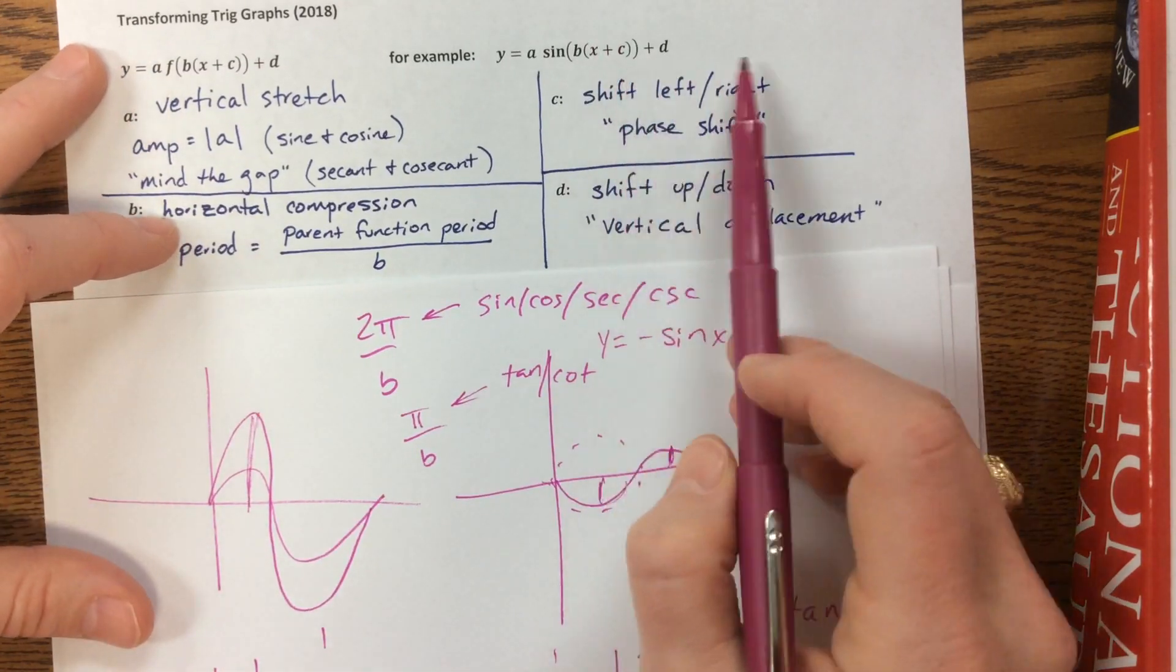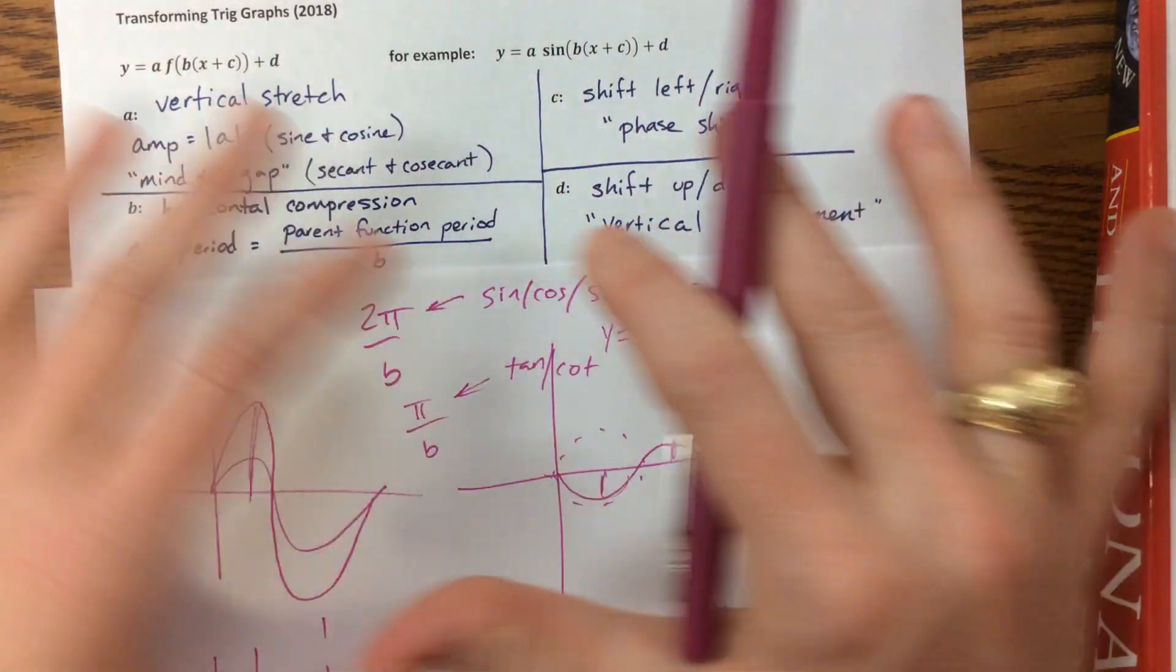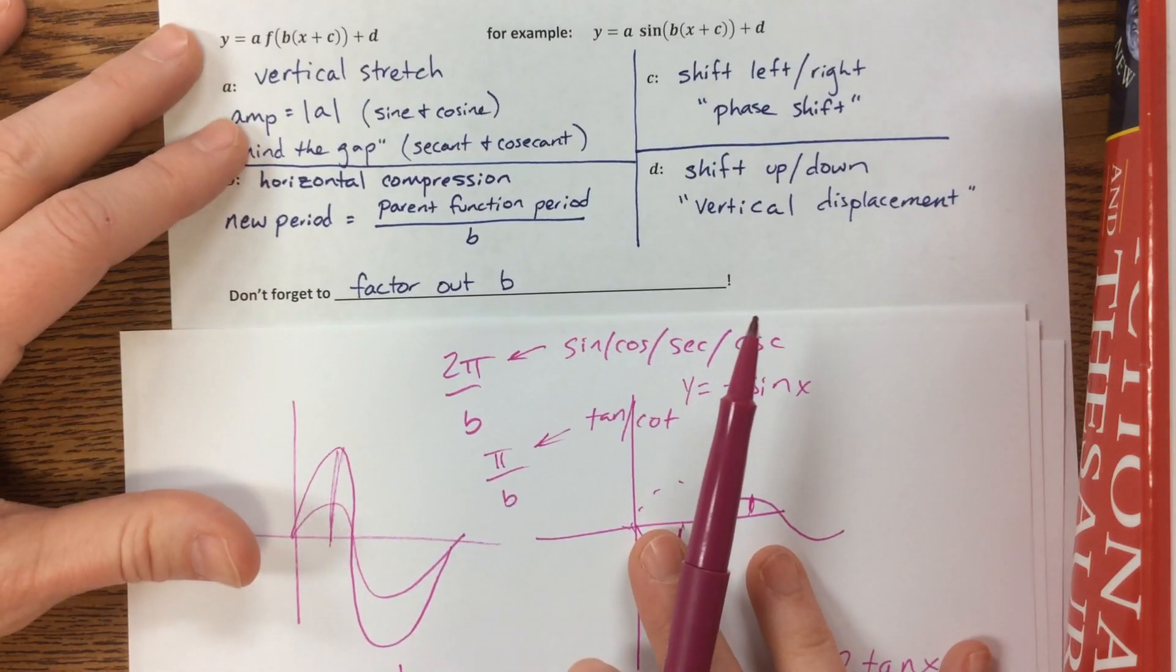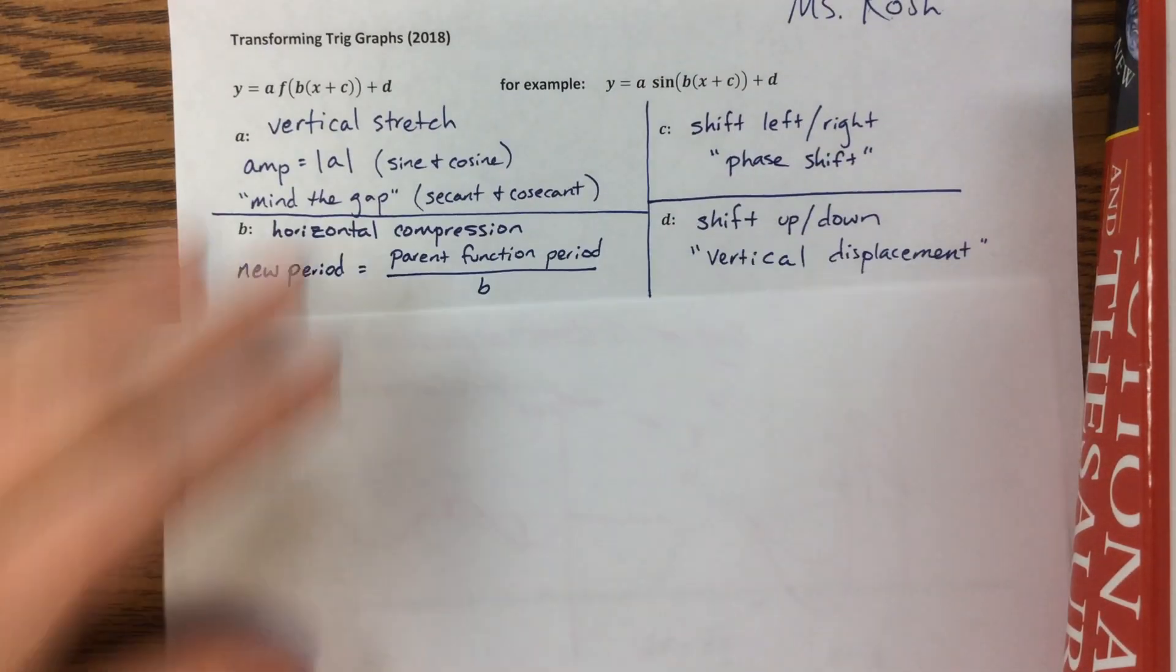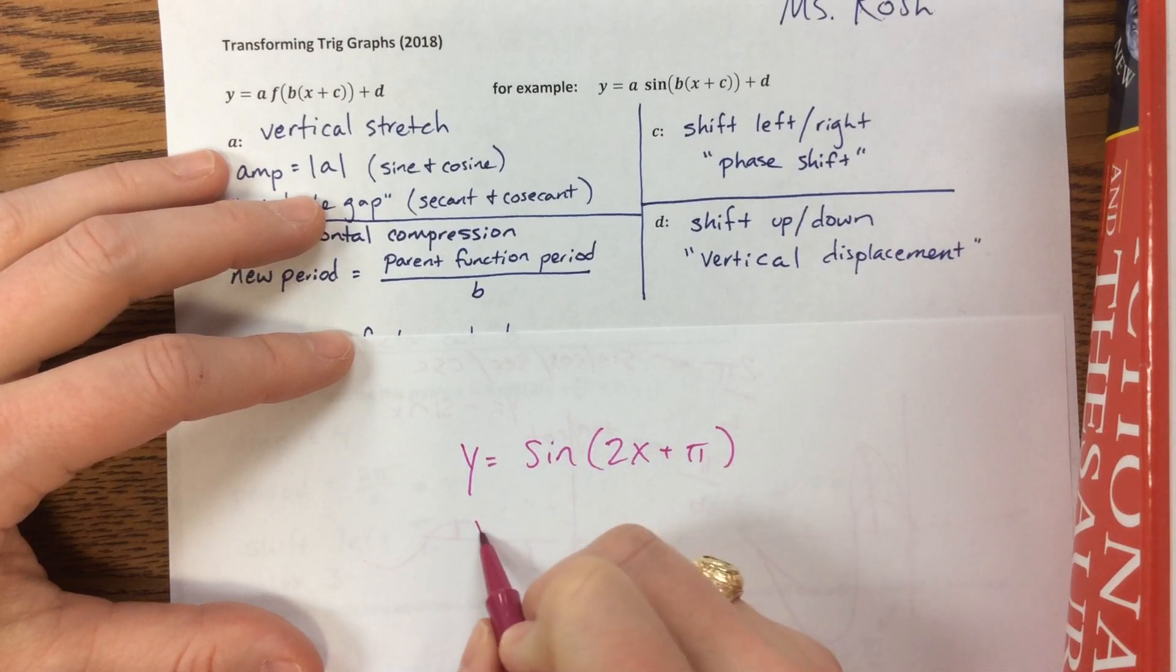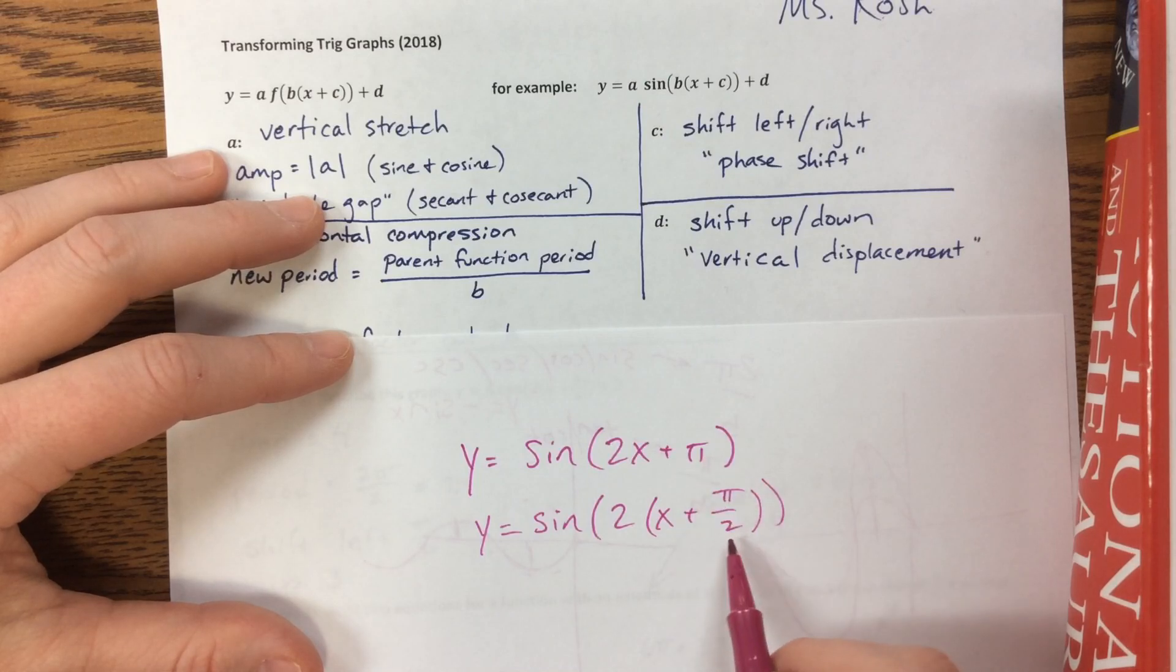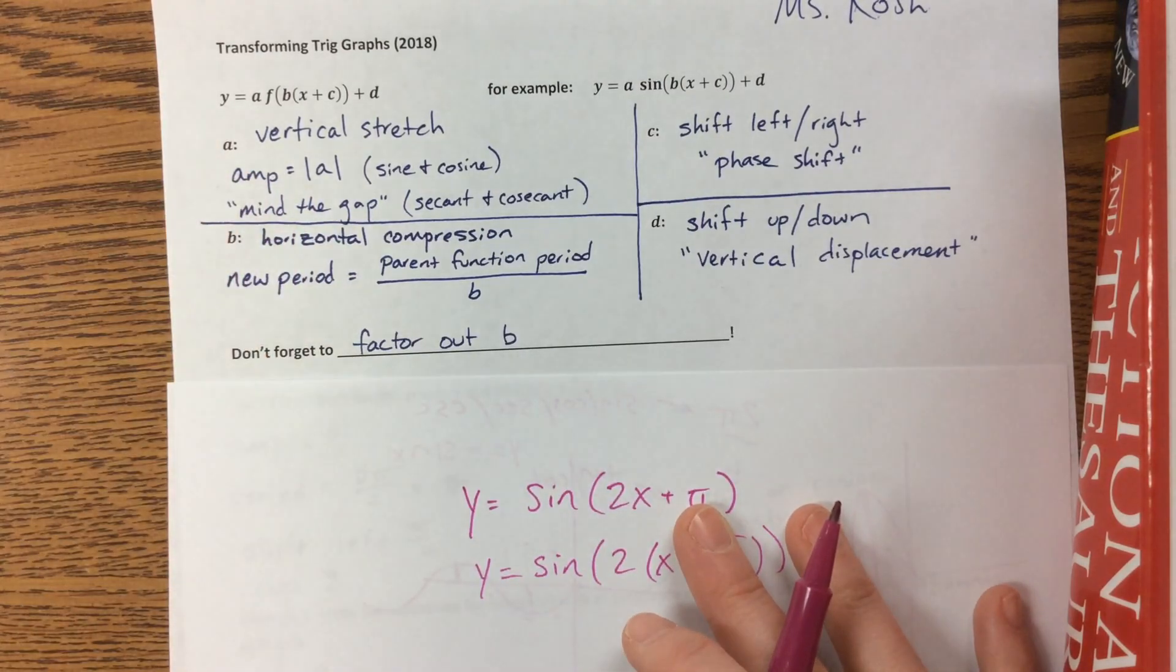So you are very familiar with shifting left and right, and that would be the c value. Sometimes this is called a phase shift, so it's just going to take our whole graph and shift it left or right. So then the d value just moves it up and down. Sometimes we call that a vertical displacement. And the thing that I want to make sure you remember is to factor out b. So if I had something like y equals sine of 2x plus π, your shift is not π. You have to factor that out, 2 times x plus, and then what do I have to multiply? This is π over 2. I always check to go multiply it back. When I distribute it back, do I get this? So this is not a shift left π. This is actually a shift of left π over 2. So be careful, don't forget to factor out b.